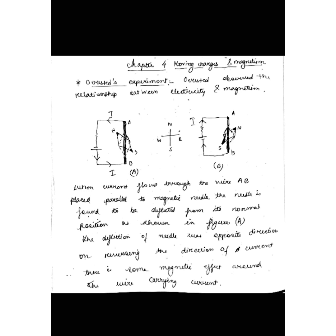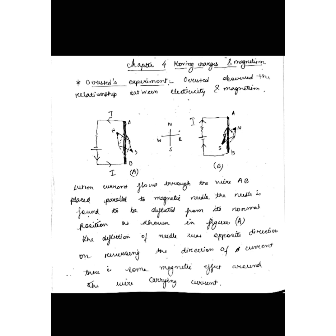When he reversed the current by changing the polarity of the battery, the needle got deflected in the opposite direction — to the right instead of the left. So regardless of the direction of current, there is always a deflection, meaning there is a magnetic field present. He concluded that a current-carrying conductor produces a magnetic field around it. This was established by Hans Oersted.